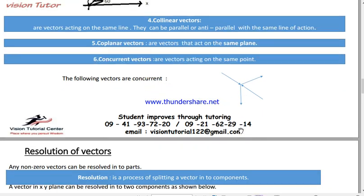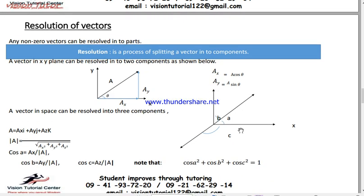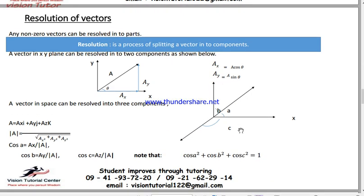Resolution of vectors — you know the word 'resolution' in biology, like a microscope, but here 'resolution' means splitting. This is the term — splitting a vector into components. Resolution of vectors: if you have a vector, you can resolve it into components along the x-axis and y-axis, and this is the position vector in the plane.